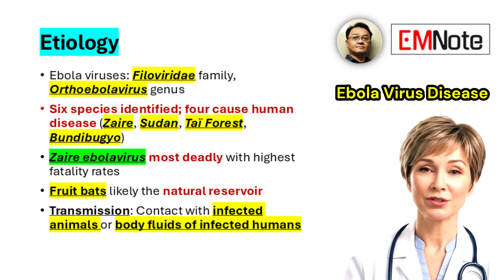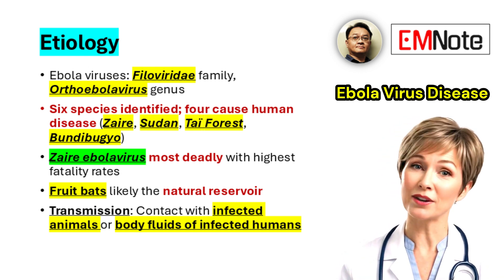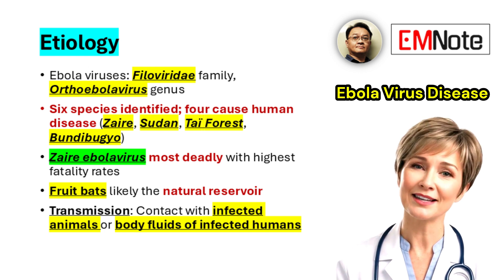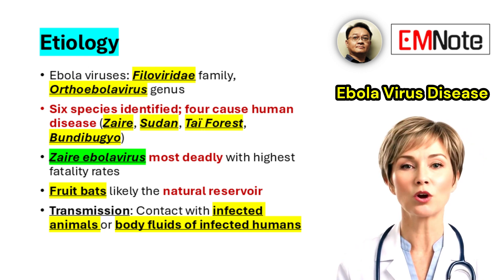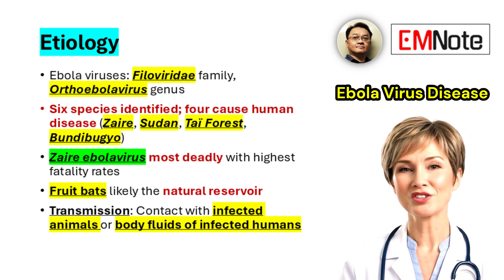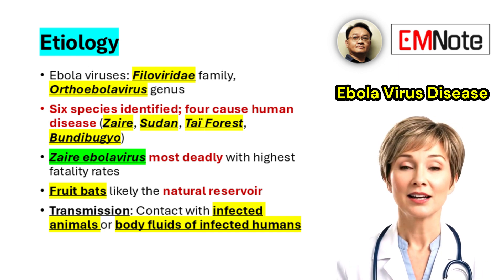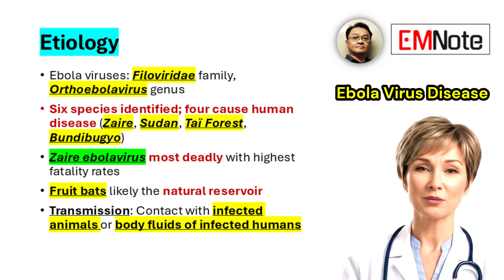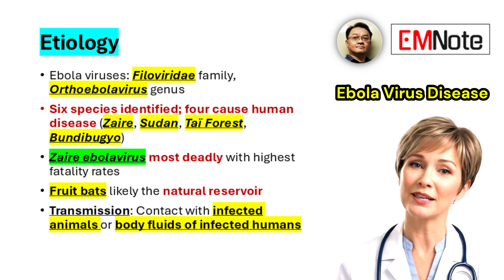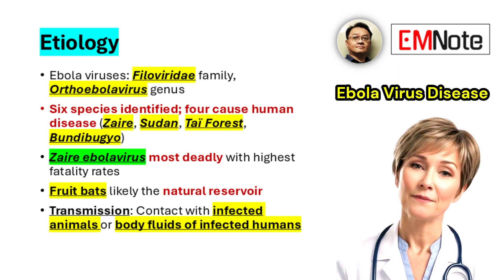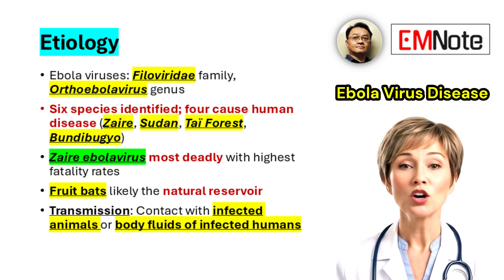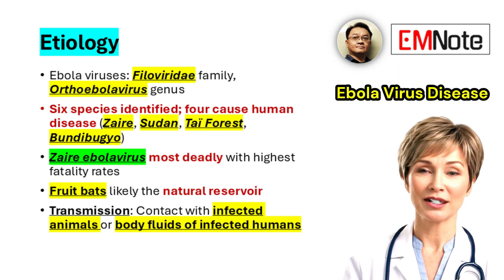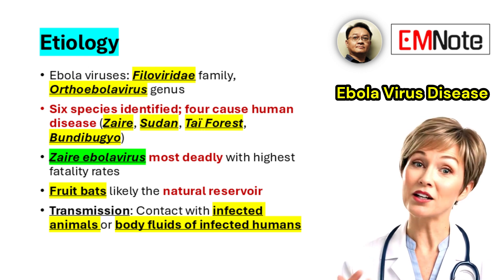The primary natural reservoir is believed to be fruit bats of the Terrapodidi family. Human infection typically follows close contact with blood, secretions, organs, or bodily fluids of infected animals such as bats, chimpanzees, gorillas, monkeys, forest antelopes, or porcupines.